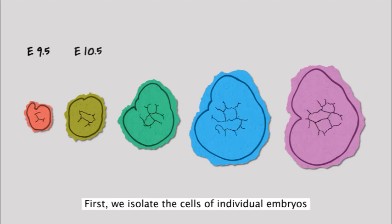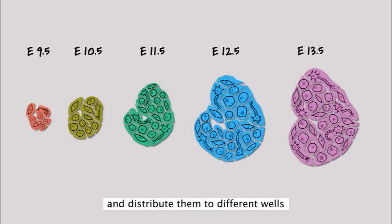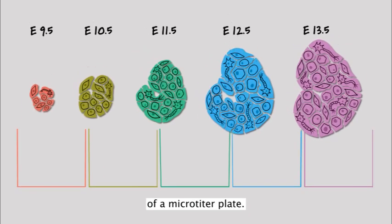First, we isolate the cells of individual embryos at five time points of mouse development and distribute them to different wells of a microtiter plate.